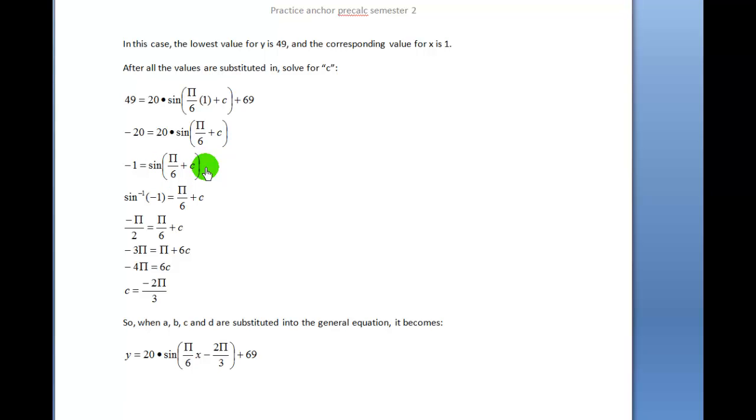Now here's where it gets a little tricky, but it's not really that bad. Because we know the sine and we're trying to find the angle, we know that the sine is negative 1 and we're trying to find the angle of π over 6 plus C. We're going to use the inverse function, so we're going to say the inverse sine of negative 1 equals π over 6 plus C.